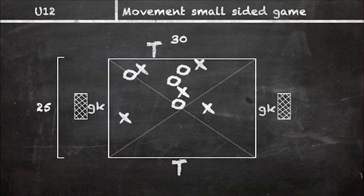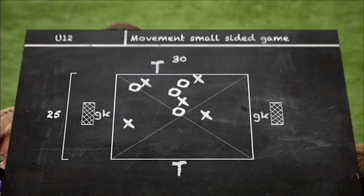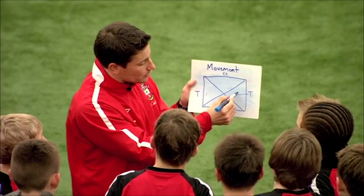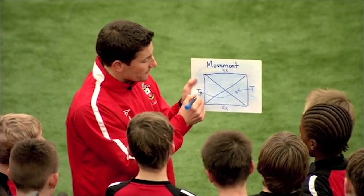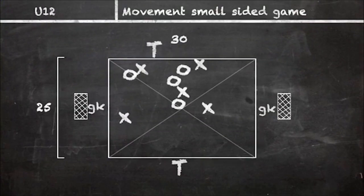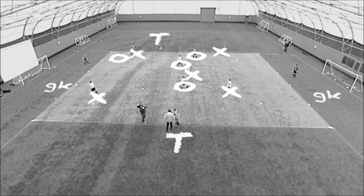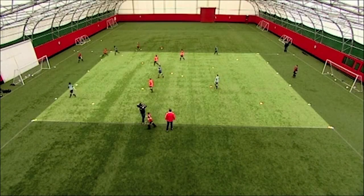It's going to be Oranges against Blues. To score, the Oranges are going to go target to target — they've got to play through, receive the ball in there, come out, and play through to the target. The Blues have got to get the ball into the goalkeeper. The goalkeeper can either use their hands or their feet. Off we go, we're live.